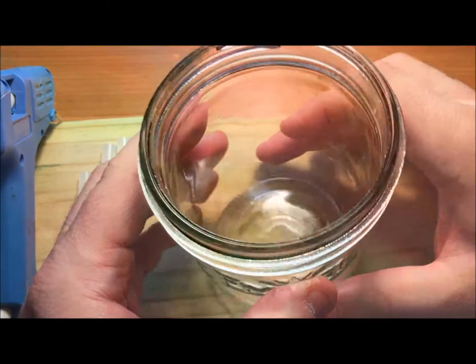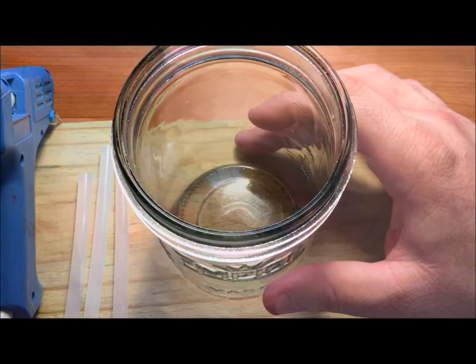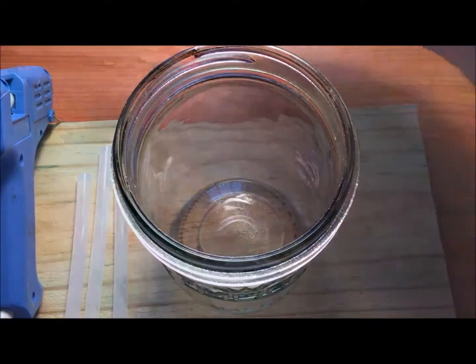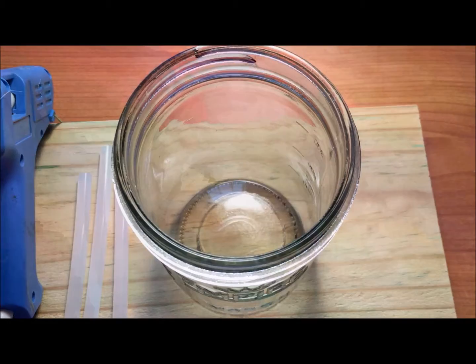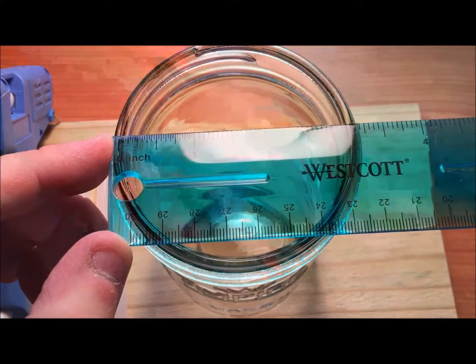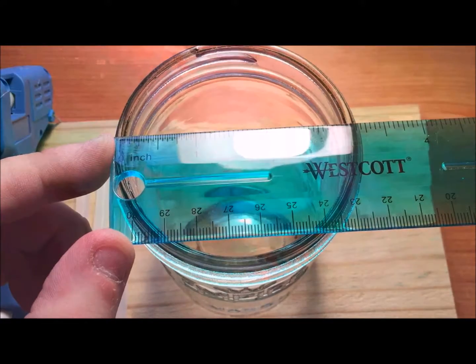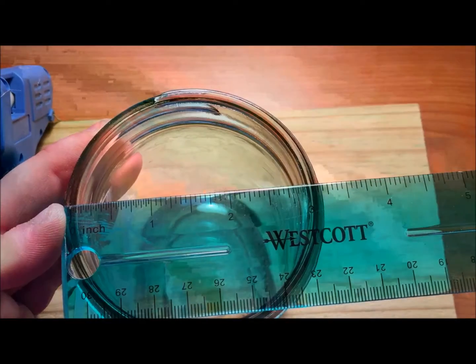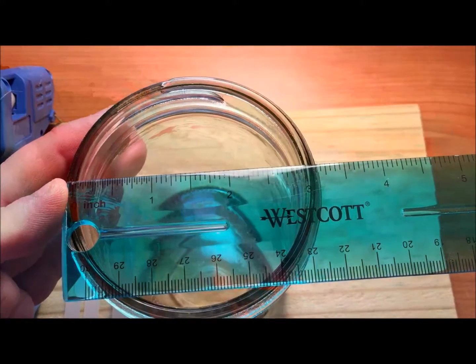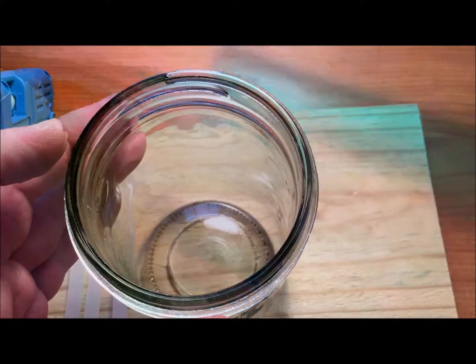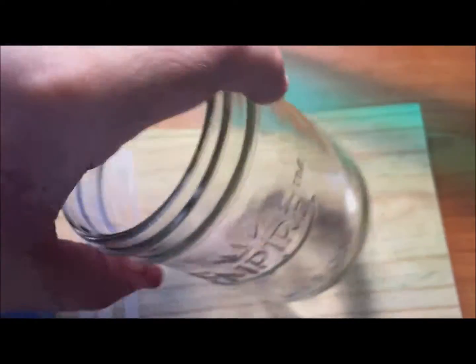Before we get too far into this, I want to measure the diameter of the mason jar. That's going to be important in understanding how this device works. It's hard to see because of the lighting, but this mason jar is exactly 3 inches in diameter. The mouth is 3 inches in diameter. I'll keep that in mind as I move forward.